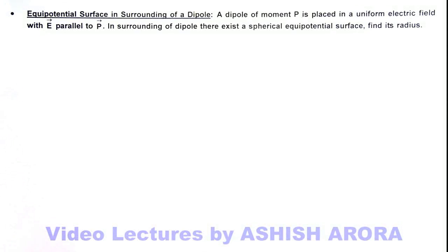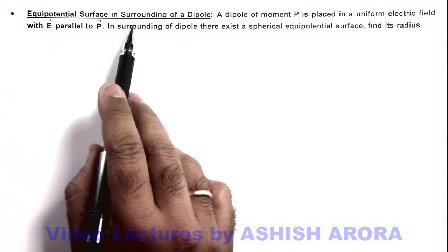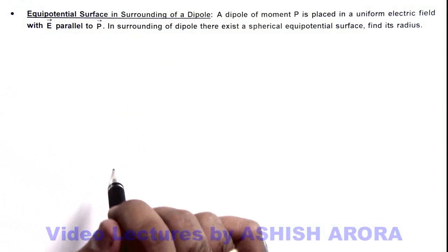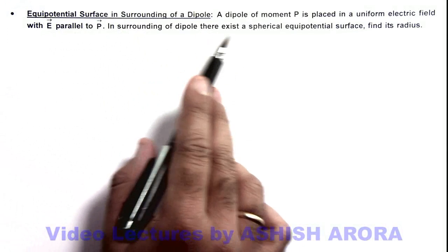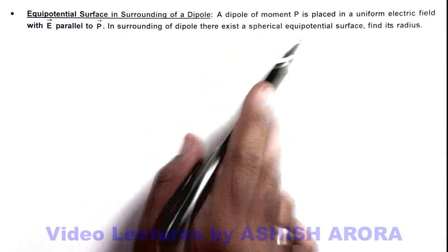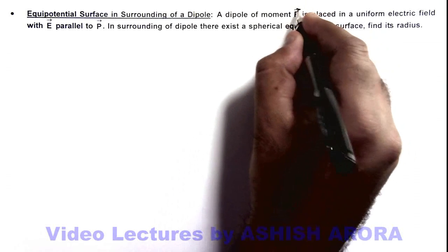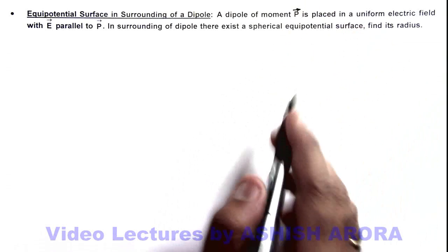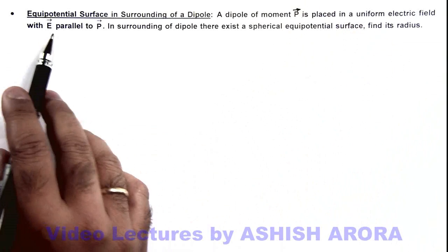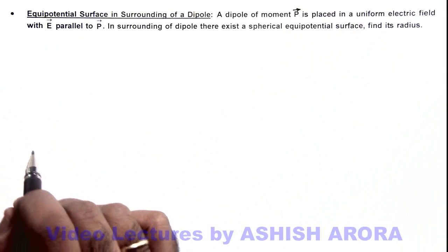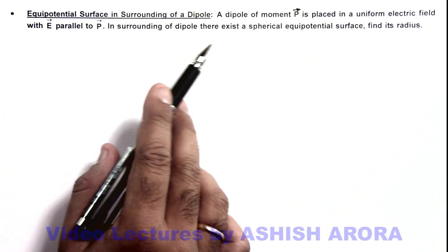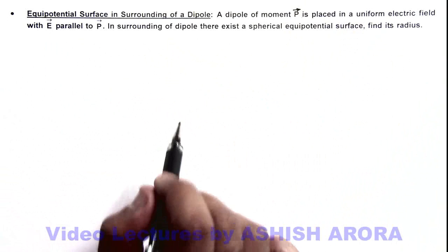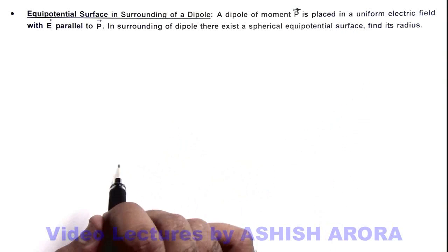In this illustration, we'll study about equipotential surfaces in the surrounding of a dipole. The situation is analyzed as a dipole of moment p placed in a uniform electric field with the e vector parallel to the p vector. In the surrounding of the dipole there exists a spherical equipotential surface, and we are required to find its radius.